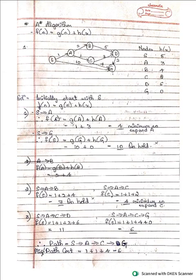Hello everyone, welcome to my channel. This is a continuation of the previous video on greedy best first search and BFS/DFS — you can refer to my previous videos. Today we are going to discuss the A* algorithm. In A*, the function f(n) is equal to g(n) plus h(x), where h(x) is the heuristic value.